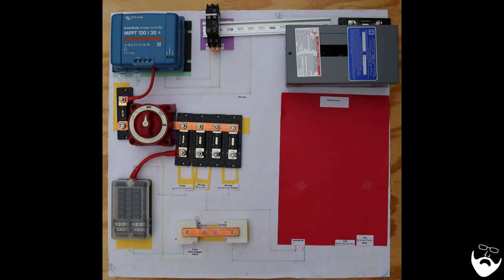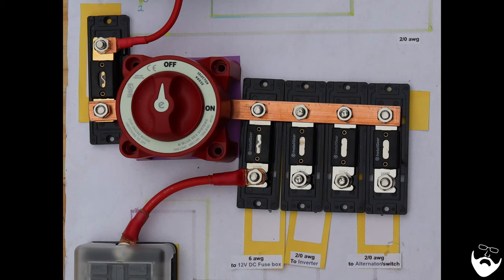After the disconnect there is a bus bar with room for four fuses. Three of them are needed, one is there for a future use just in case I need to protect a circuit with a different fuse rating. Remember, always design with options so you have the flexibility to make changes in the future without having to rebuild the entire system.